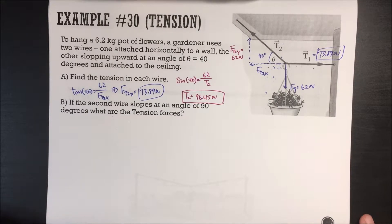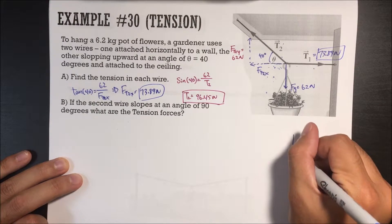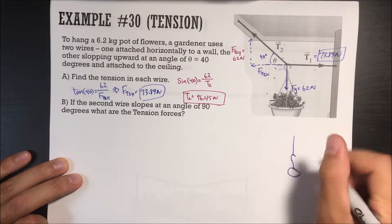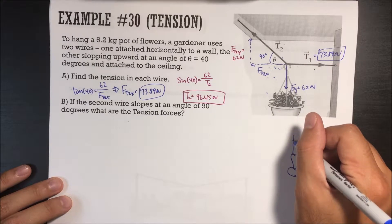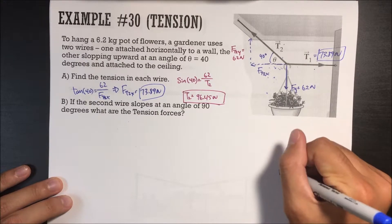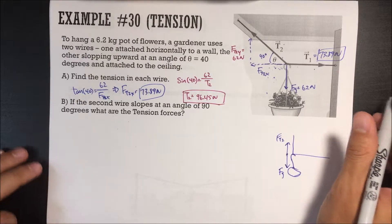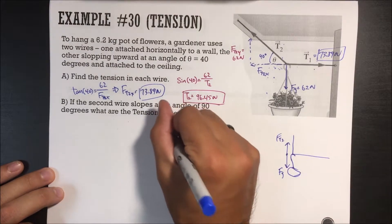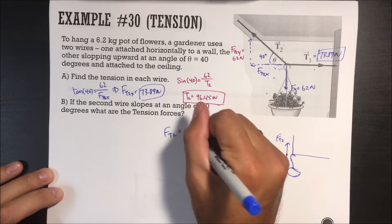If the second wire slopes at an angle of 90 degrees, what are the tension forces? If we draw this out, with a 90-degree angle the angled wire becomes vertical and carries all the weight. So force of tension 2 equals the weight, which is 62 newtons. The horizontal wire becomes slack and doesn't do anything, so tension 1 is zero.